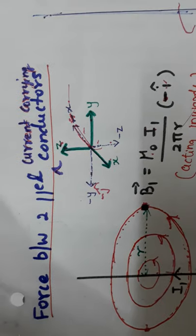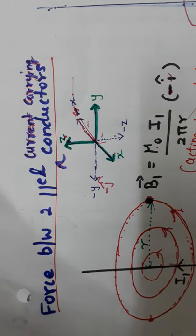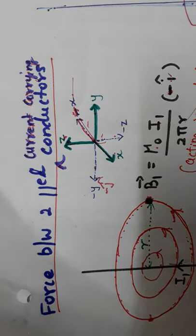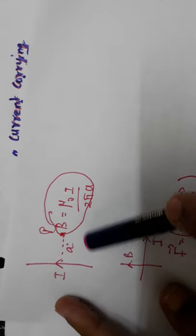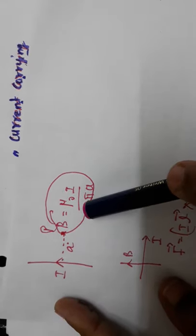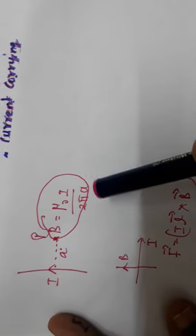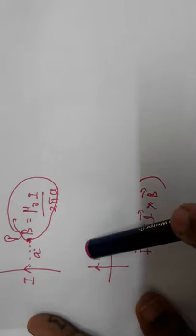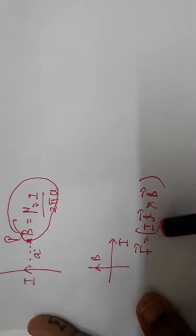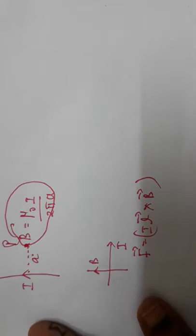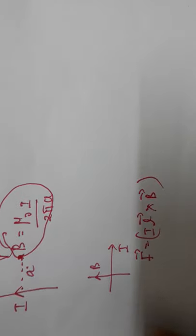Hello children. In this video we are going to derive the formula for force between two parallel conductors carrying current. Before that, we will recollect the formula using Biot-Savart's law. We have calculated that a current-carrying conductor at a point P at distance A produces magnetic field B equal to μ₀i / 2πA. We have also learned that a current-carrying conductor in a perpendicular magnetic field experiences magnetic Lorentz force: F = IL × B.